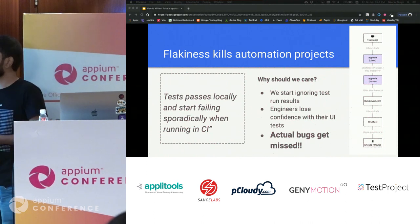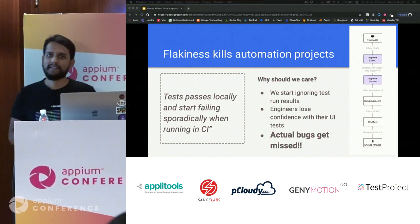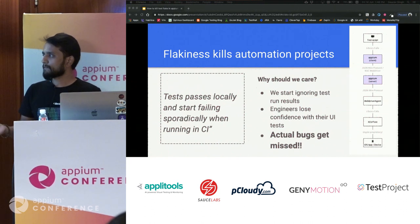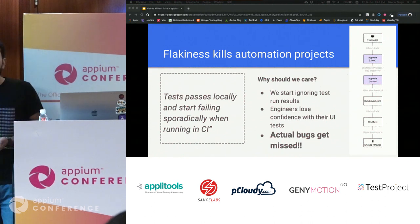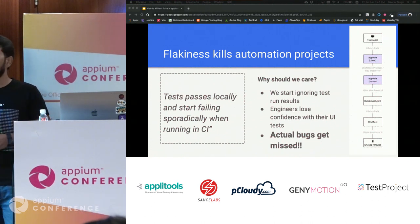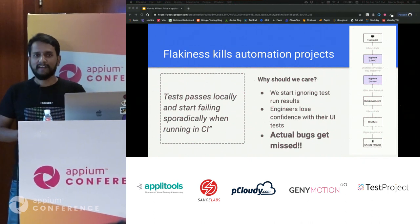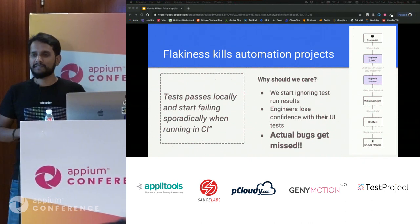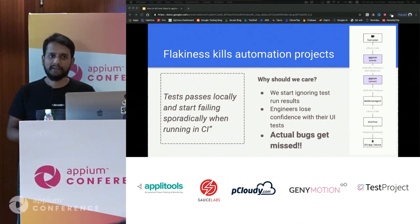Why should we really care? Because as soon as your builds start becoming yellow over a period of time, you start losing confidence in your tests. The developers monitoring those test results will not look at them the same way — they're not going to trust whether it works fine or not. And in this process, you might actually start missing real bugs in your application.